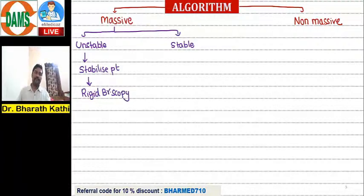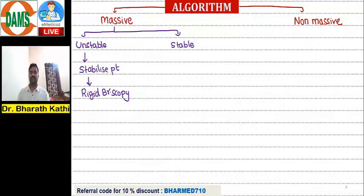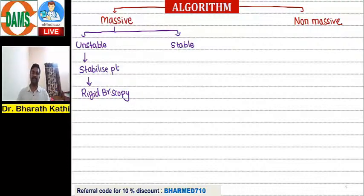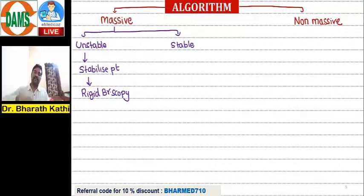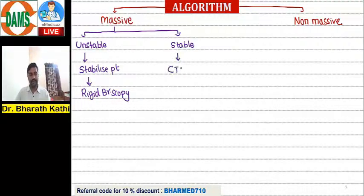If the patient is unstable, I immediately stabilize and go for rigid bronchoscopy. Bronchoscopy is of two types: rigid bronchoscope and flexible bronchoscope (fiber optic bronchoscope/FOB). The advantage of rigid bronchoscope in massive hemoptysis with unstable patients is its large suction channel, which can suck out blood clots from the trachea and save the patient's life.